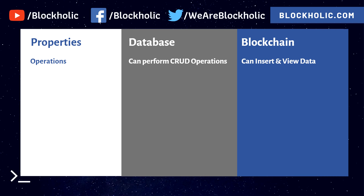You can only insert and view data in blockchain. The second point is ownership — no one owns the blockchain; everybody has a copy of the blockchain data. In traditional databases, the entity owner has complete access. For example, if someone is fired from a company and still has database access, they could just delete everything — but in blockchain, that won't happen.